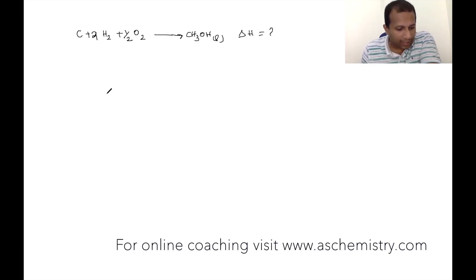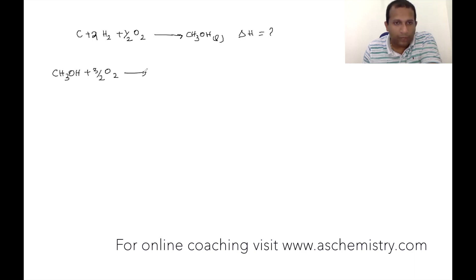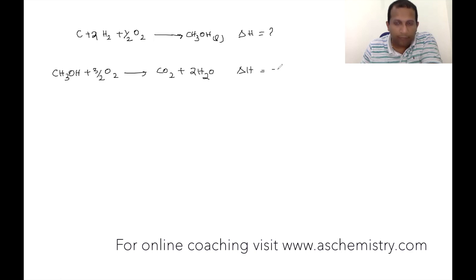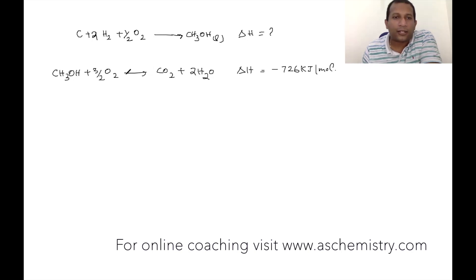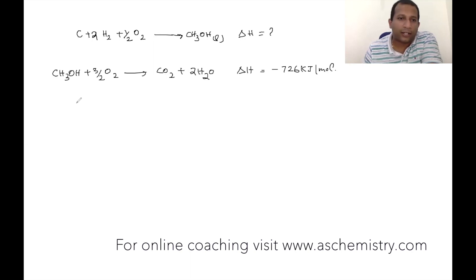The given data: CH3OH + 3/2 O2 → CO2 + 2H2O. This equation has the left side and the right side. We will reverse this equation. If we reverse this equation, the ΔH value becomes a positive value.